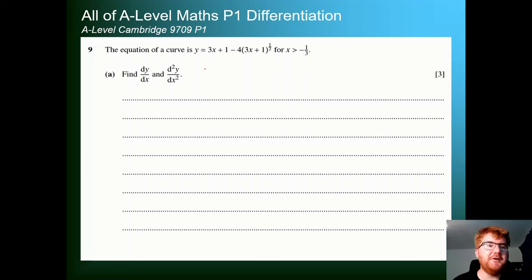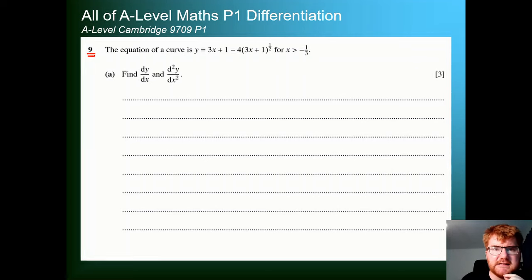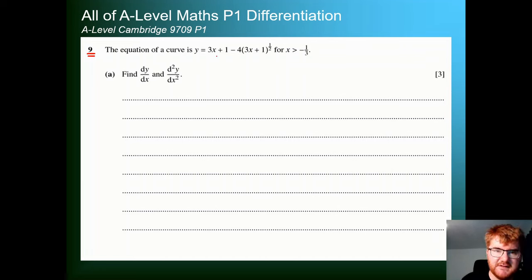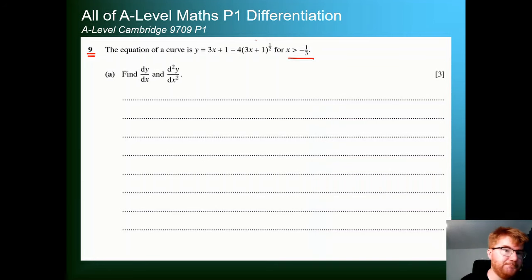On to question 9, which is going to be a bit more tough. We're still using the chain rule in a slightly more difficult context. We're told the equation of the curve is this function with x greater than minus a third. We want to work out both the first derivative dy/dx and the second derivative as well. Let's take this nice and gently.